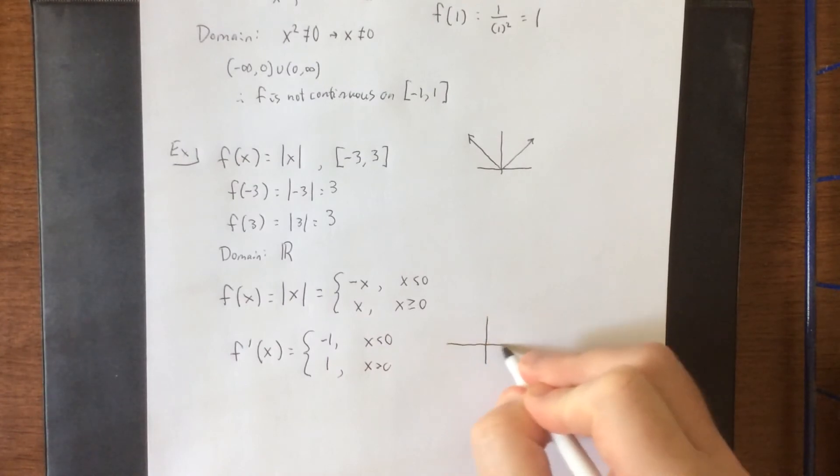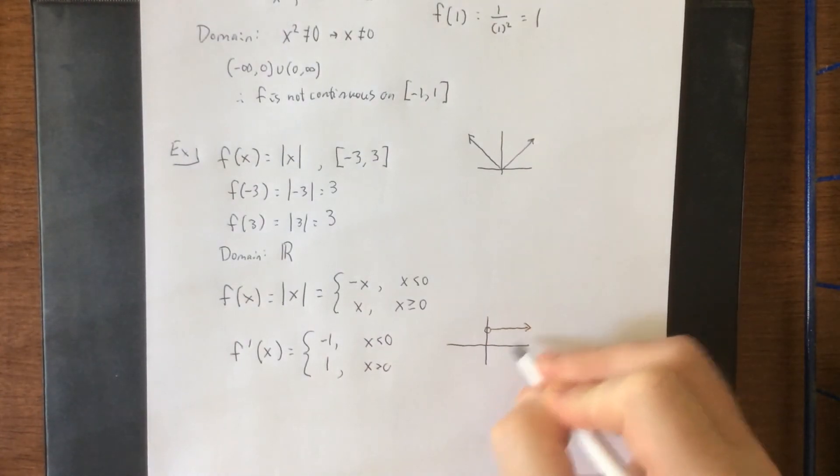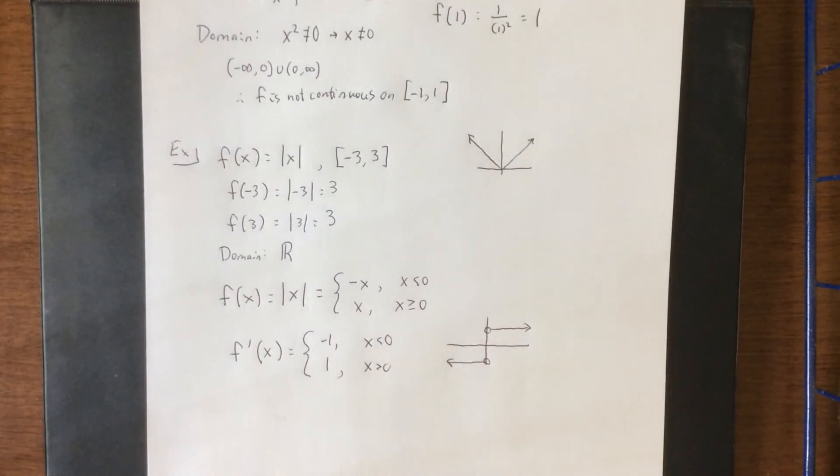So the derivative of our absolute value function actually looks like this. There is a jump discontinuity at x equals 0.